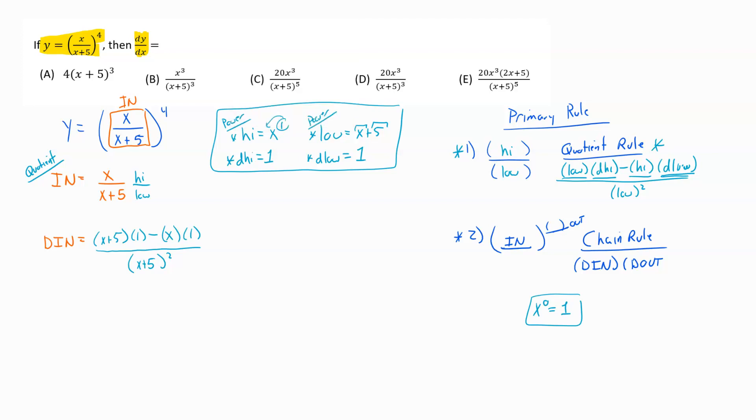Now that I've got the d in, I can start building back my primary rule. Looking at what my derivative would be, I get dy dx equals d in. I could simplify as I come through. 1 times x plus 5 is just x plus 5. 1 times x is minus x. And that is all over x plus 5 squared. There's my d in.